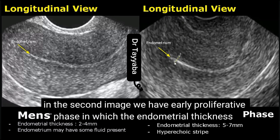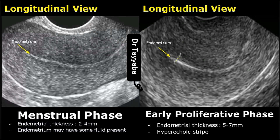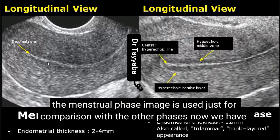In the second image, we have the early proliferative phase, in which the endometrial thickness is between 5–7 mm. The endometrium appears hyperechoic. The menstrual phase image is used for comparison with the other phases.